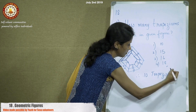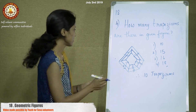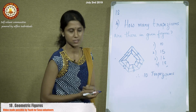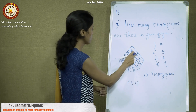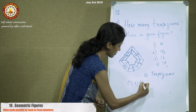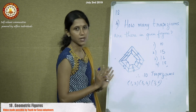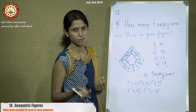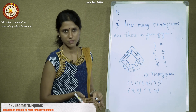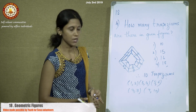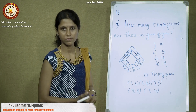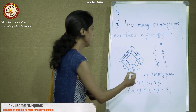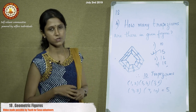Now taking combinations of two parts: 1 and 2 form a trapezium; 3 and 4 form a trapezium; 5 and 6 form a trapezium; 7 and 8 form a trapezium; and 9 and 10 form a trapezium — giving 5 more trapeziums. With 3 or more parts joined, the shape is not a trapezium, and the whole diagram together is also not a trapezium. So the total count is 10 small trapeziums plus 5 combined trapeziums = 15. The answer is the second option, 15.